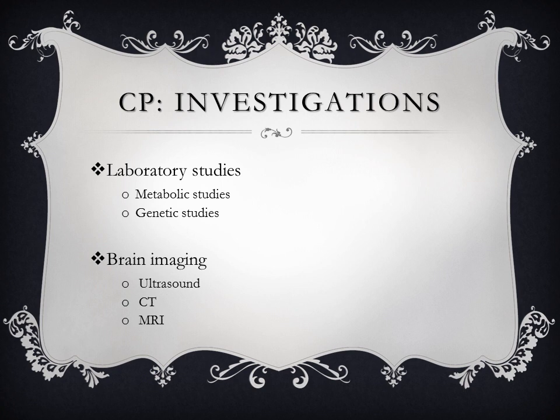Additional investigations to detect underlying pathologies and complications include: ultrasound of the head in preterm infants for intraventricular hemorrhage; MRI brain for white matter lesions; metabolic studies for inherited metabolic disorders; genetic studies to rule out a genetic syndrome if dysmorphic features or abnormalities of organ systems are present; coagulation studies in cases with unexplained cerebral infarction; and EEG for the diagnosis of associated seizure disorders.